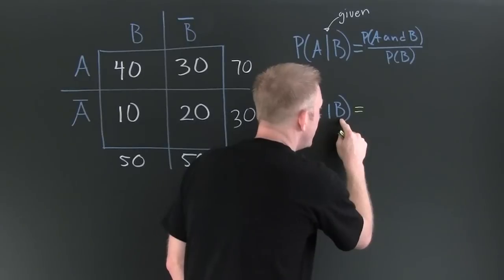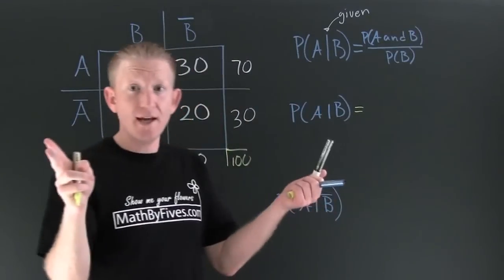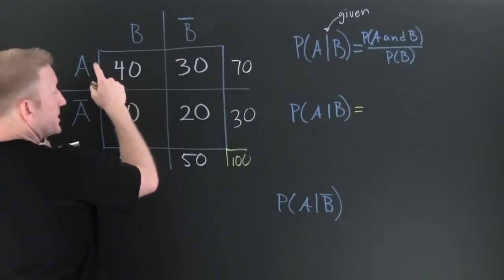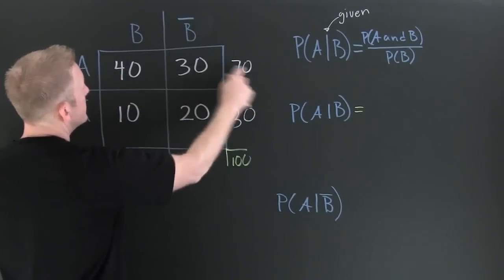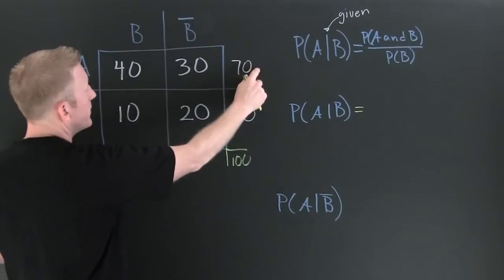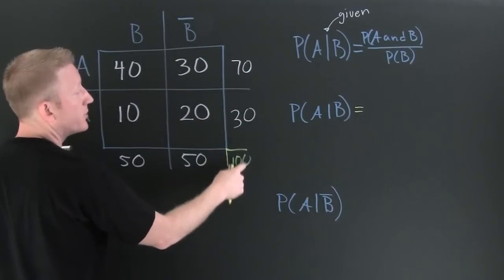So I need the probability of B given A. And here's how. We take the probability of A and B. That's the overlap. A and B. The overlap divided by the total.